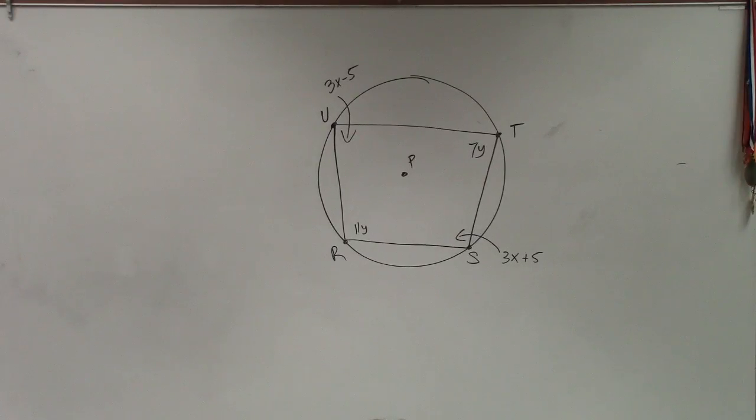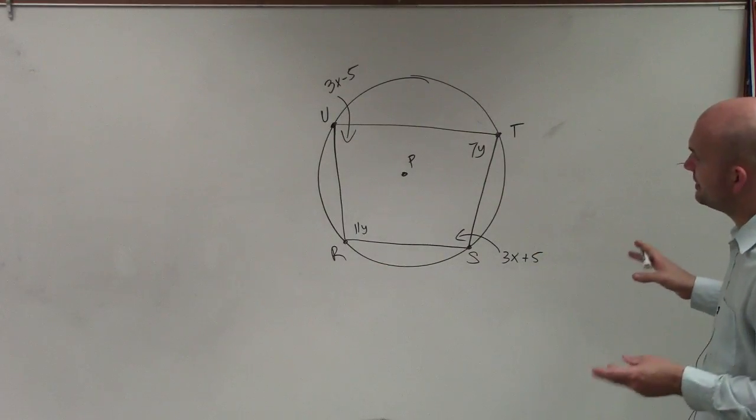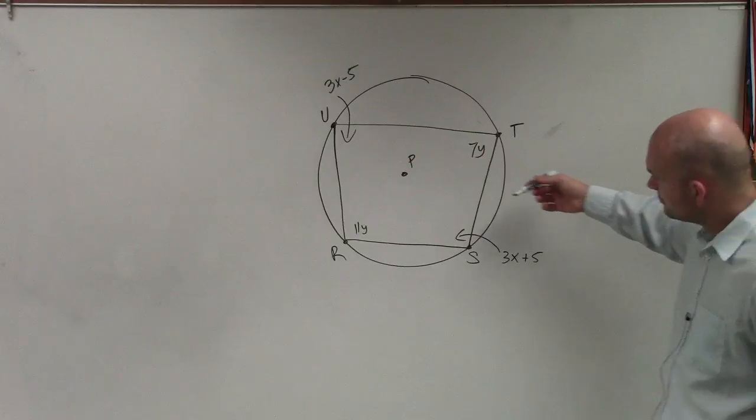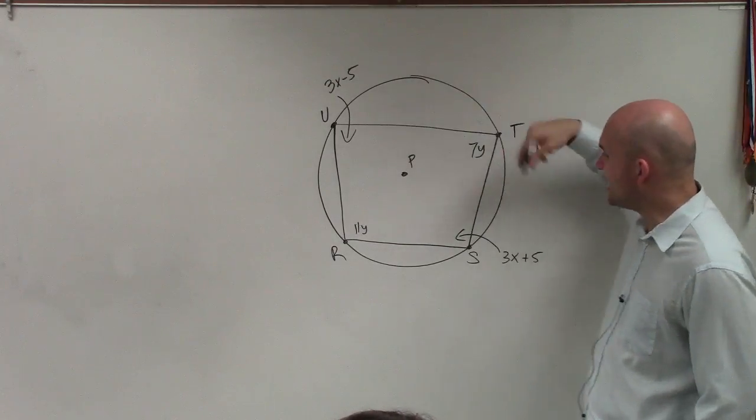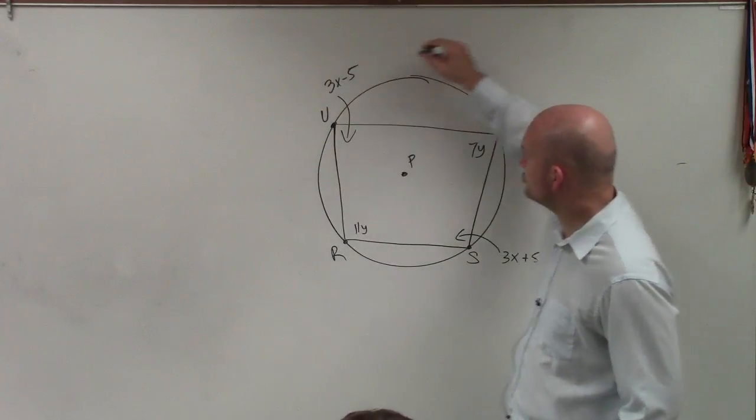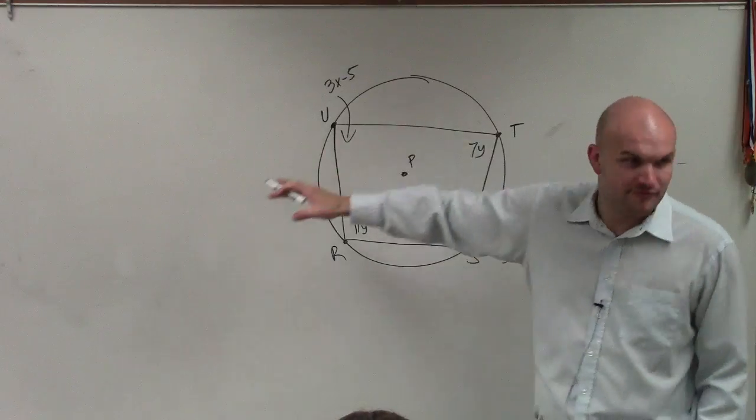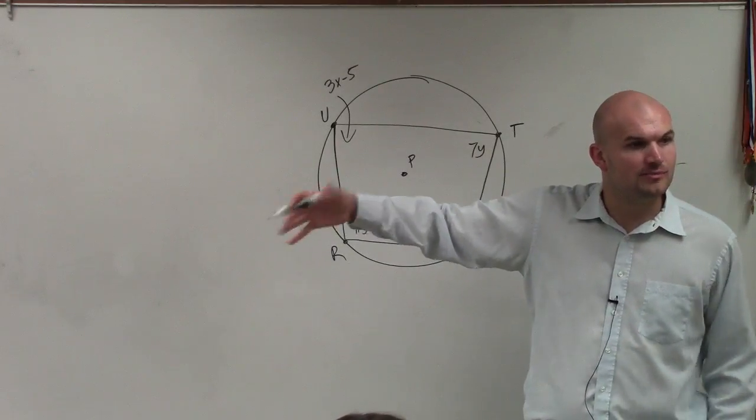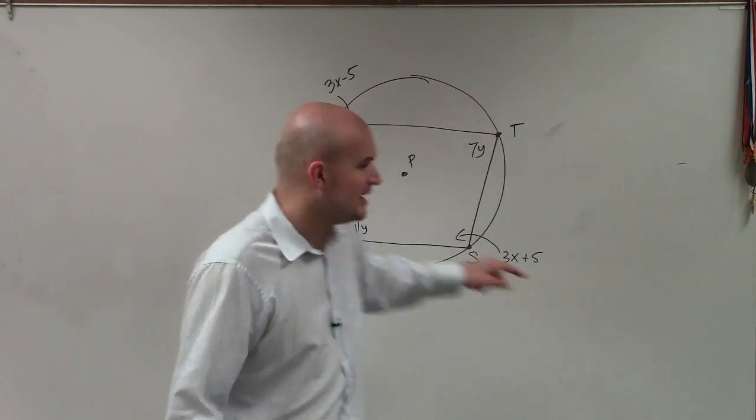So when we're looking at this example, one thing I want you to understand is when we're looking at these two, you can see that if we're trying to figure out the measure of x and y. One thing I want you to understand is that these two arcs, if you look at this arc and this arc, the measurement of them complete a circle.